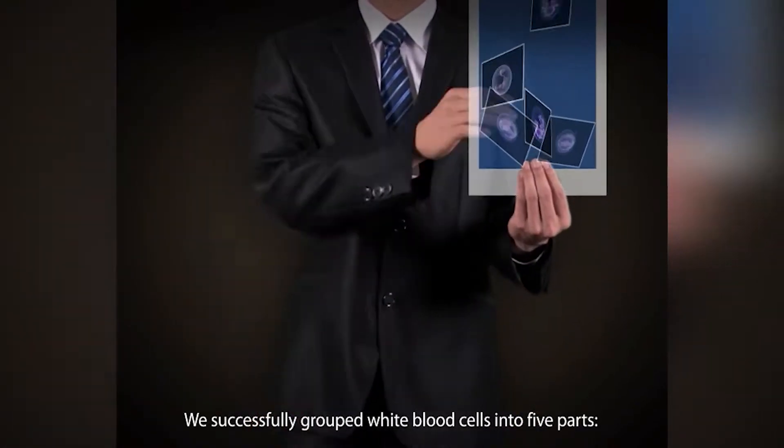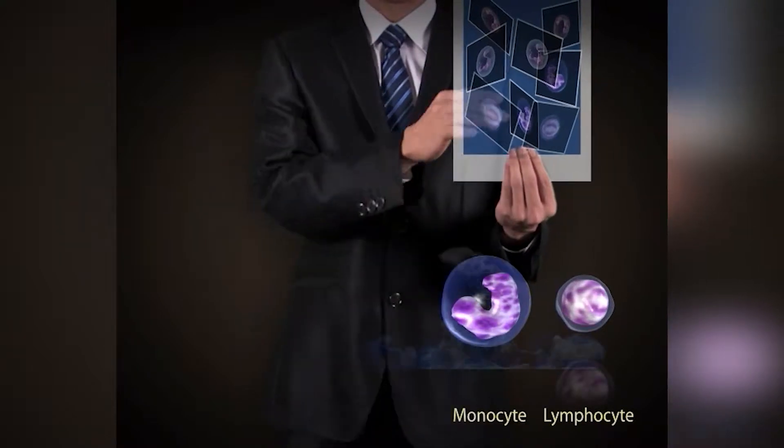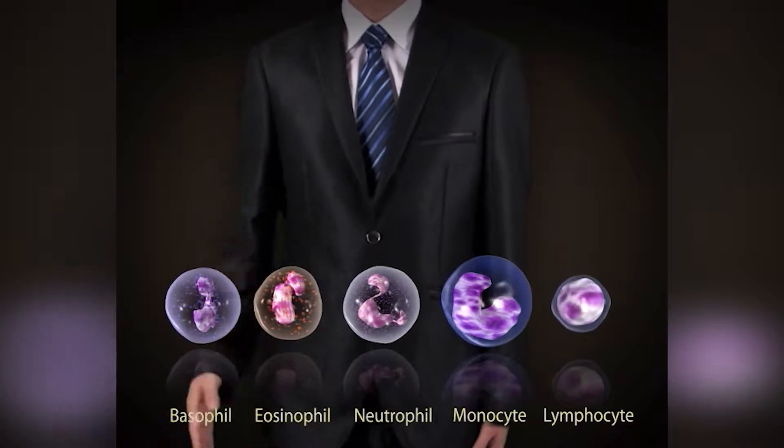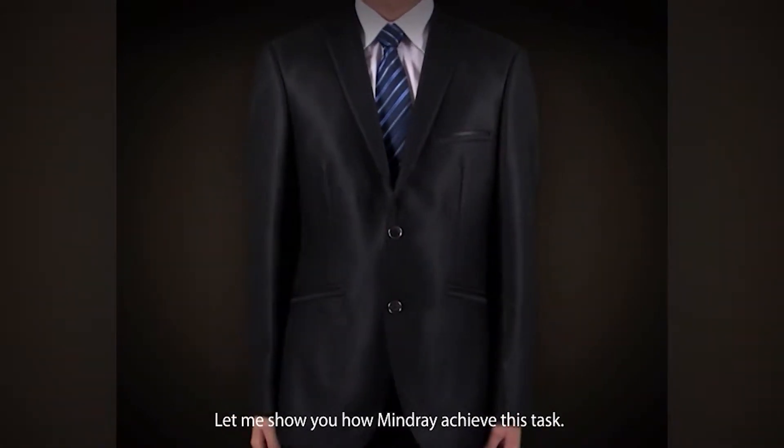We successfully grouped white blood cells into five parts: the lymphocyte, monocyte, neutrophil, eosinophil, and basophil. Let me show you how Mindray achieves this task.